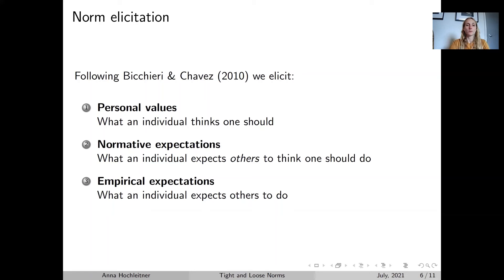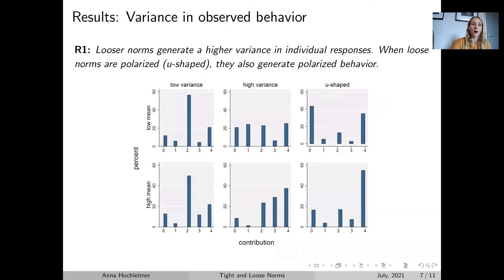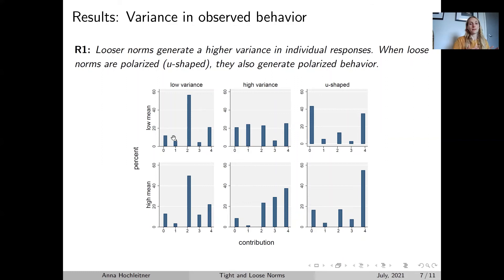So what do we find in our experiment? Our main result is that looser norms generate a higher variance in individual responses. This picture is quite striking — it shows that when people are confronted with different distributions, they react in a way that mirrors those contributions. People who saw the very tight distribution show very tight behaviour, with most people contributing two tokens. By contrast, if people are facing a lot of variance, their behaviour is also much more varied. This also shows that tight and loose norms are self-sustaining, as people react exactly in the way they observe the behaviour of others.